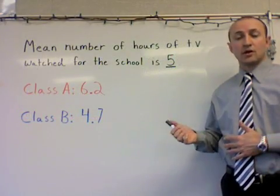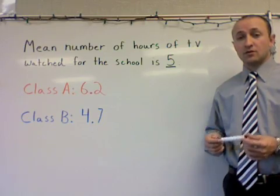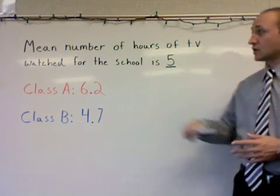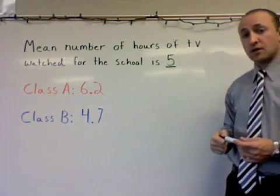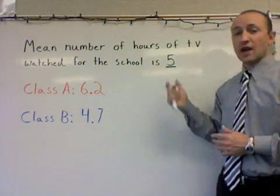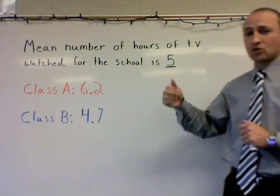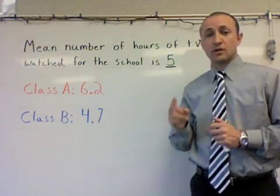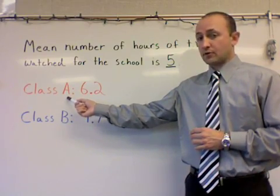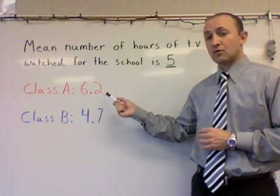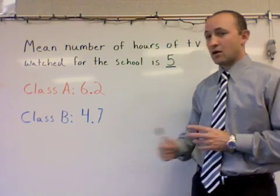In our last example, we're going to look at the mean — our third vocabulary word, which is basically the average. The mean number of hours of television watched for the whole school — the large school we were talking about — is five hours. So the average number of hours each student watches TV per day is five. Now let's go back to our sample of two classrooms: classroom A and classroom B. Classroom A on average watches TV for 6.2 hours per day, and classroom B watches television at an average of 4.7 hours a day.